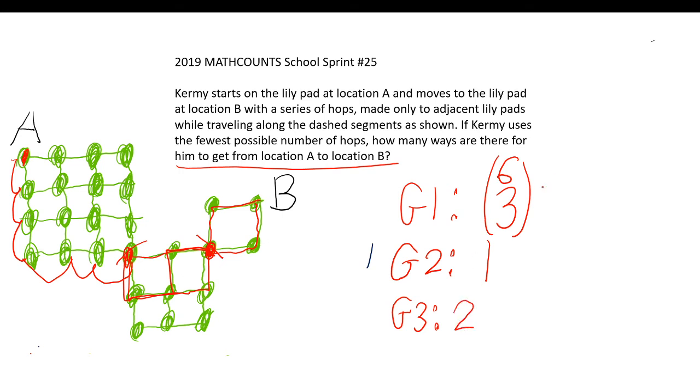Now, all we need to do is compute six choose three, which is six times five times four over three factorial. Three and the two cancel the six. We have five times four, which is 20.